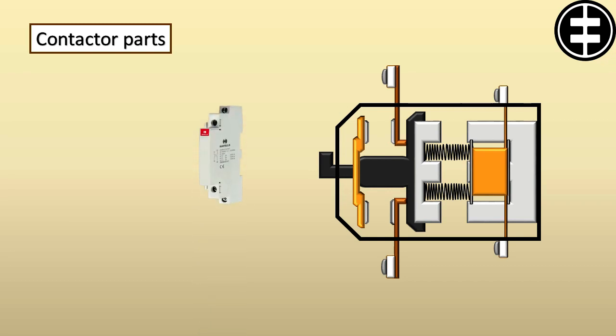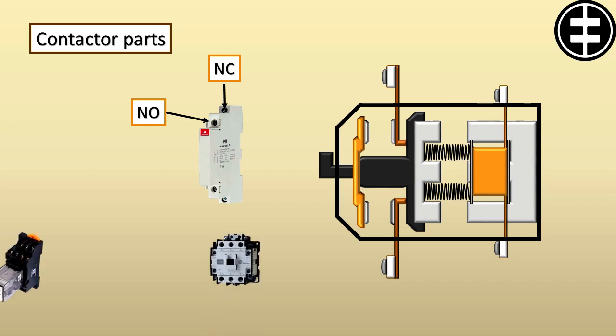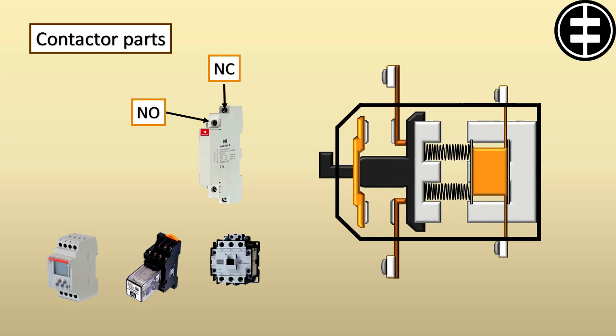Auxiliary contacts could be normally open or closed, and are not designed to carry high load like the main contacts. They allow us to make on and off for light current loads such as contactor coils, relays, timers and many other control circuit parts. They are linked to the contactor mechanism, so when the contactor is energized, they will change status from normally open to closed, and vice versa.